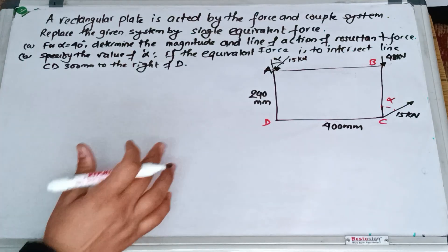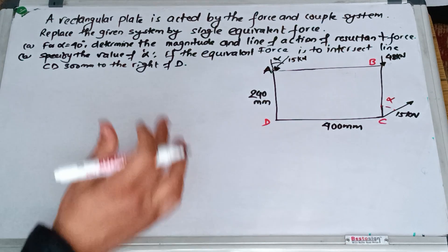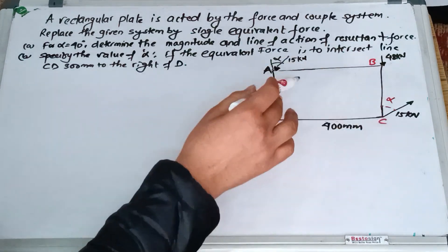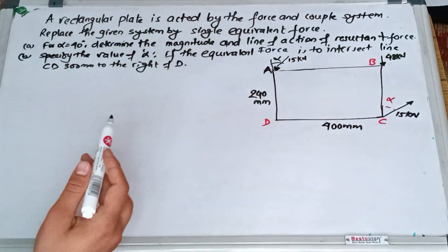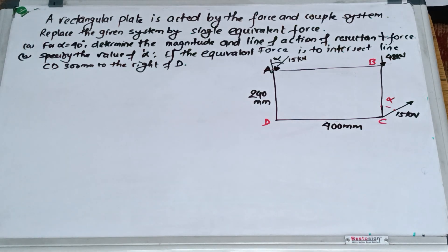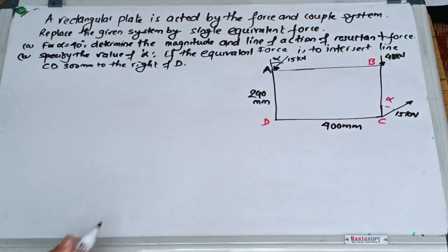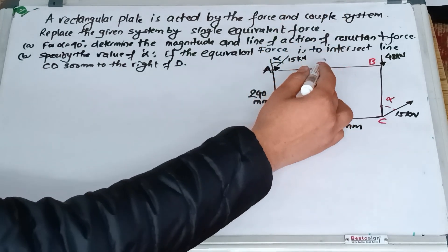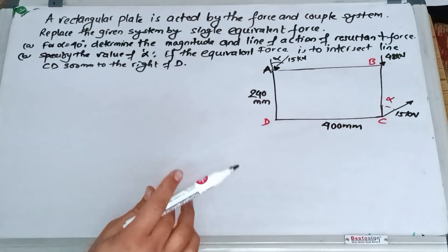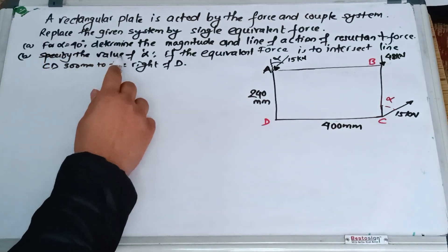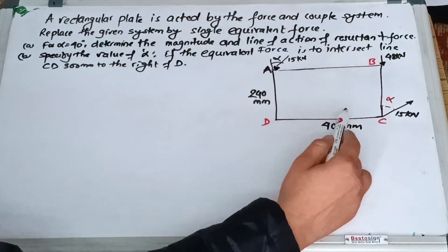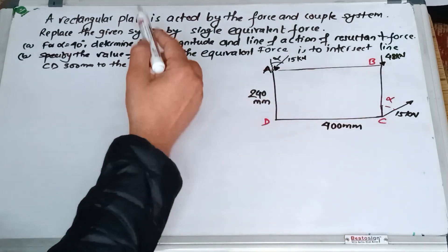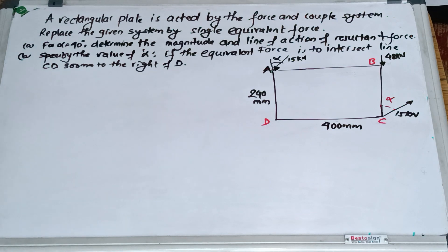In engineering mechanics, also called applied mechanics, this is a very important topic for university examinations. A rectangular plate is acted upon by a force and couple system. You have to replace the given system of forces with a single equivalent force. Given alpha equals 40 degrees, you have to determine the magnitude and line of action of the resultant force such that the equivalent force intersects line CD, 300 mm to the right of D.